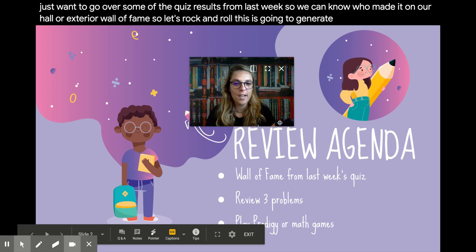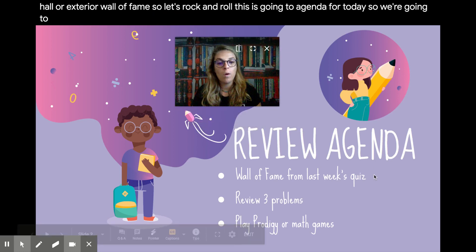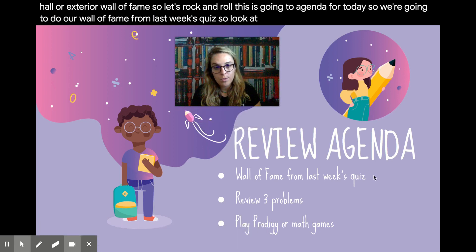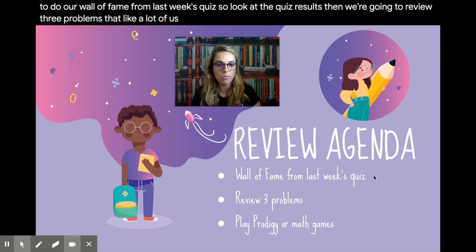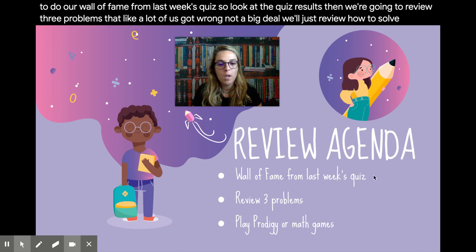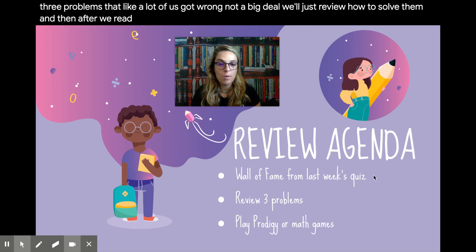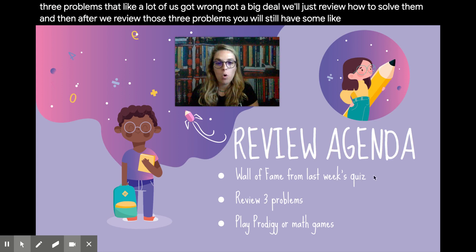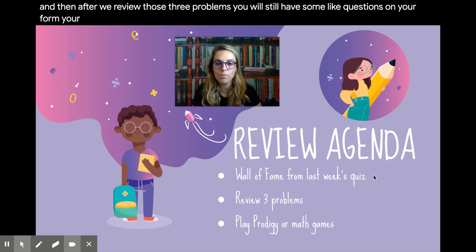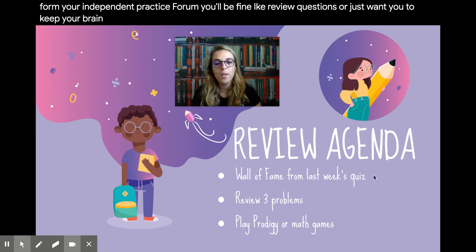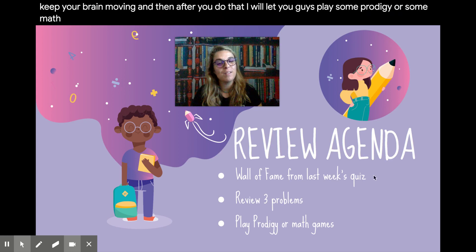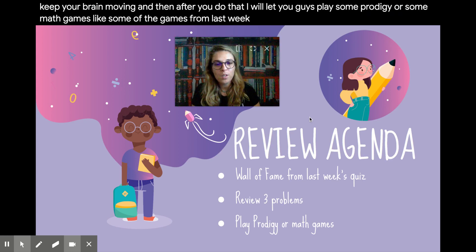This is our agenda for today. So we're going to do our wall of fame from last week's quiz, look at the quiz results. Then we're going to review three problems that a lot of us got wrong. Not a big deal, we'll just review how to solve them. And then after we review those three problems, you'll still have some review questions on your independent practice form. I just want you to keep your brain moving. And then after you do that, I will let you guys play some Prodigy or some math games. So let's rock and roll.